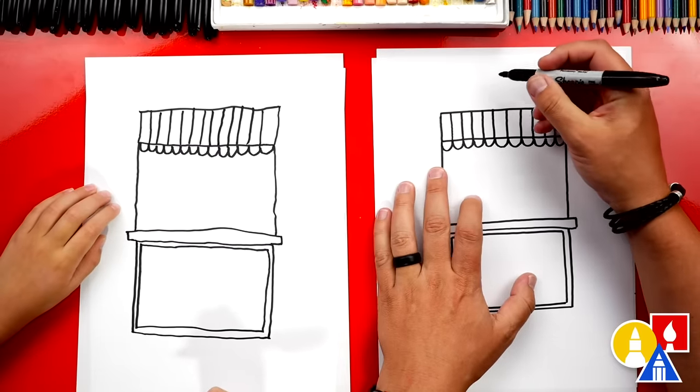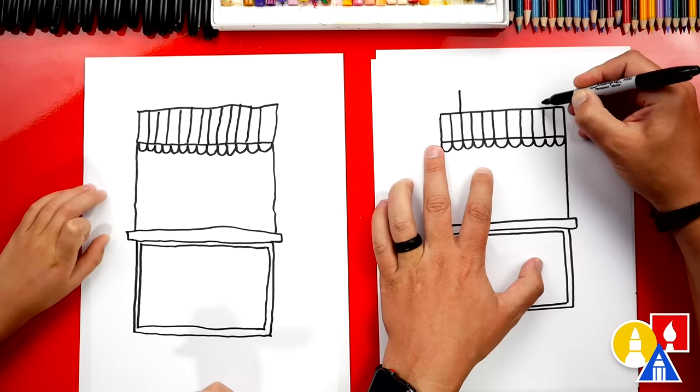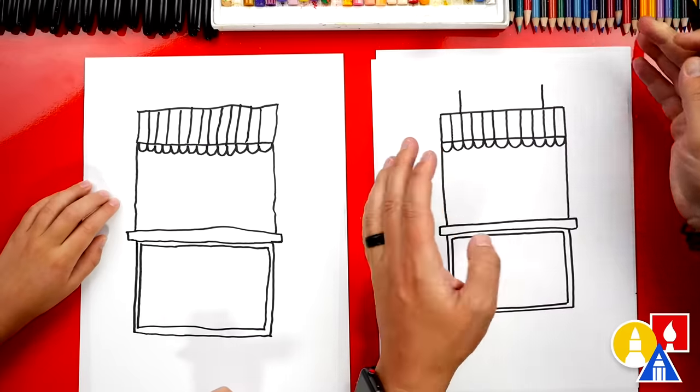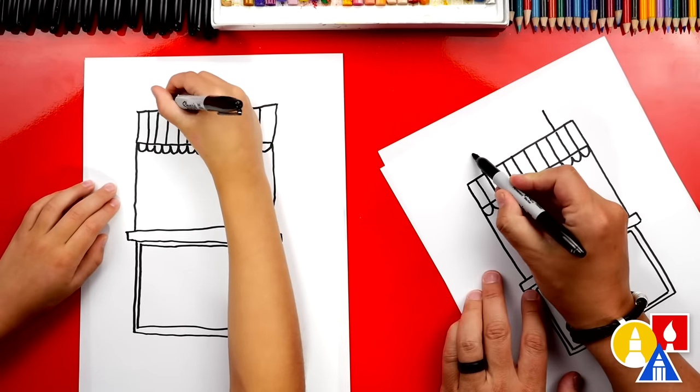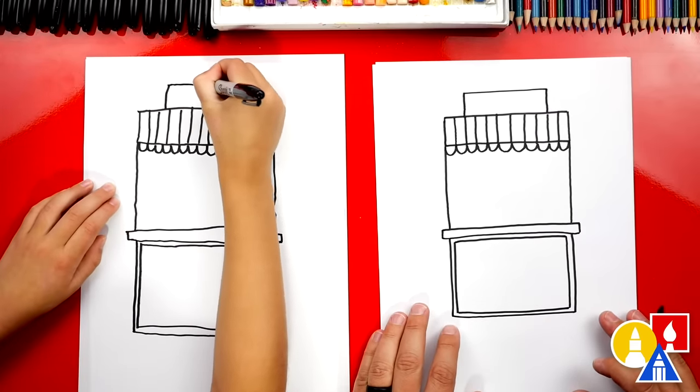Next, we need to add the sign for our hot dog stand. We're going to draw another rectangle. This line, we're going to come in a little closer, and then we'll connect that at the top also. A lot of rectangles. A ton of rectangles.